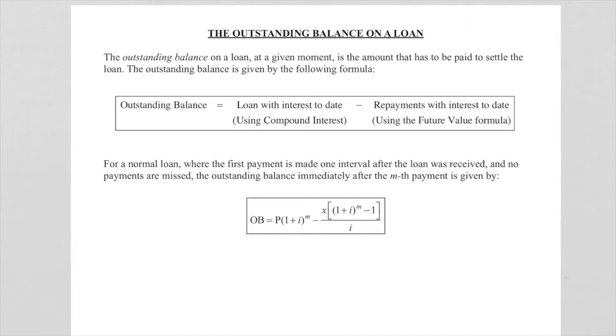So in terms of symbols, this outstanding balance will be P(1+i)^m minus x[(1+i)^m - 1]/i. Please take note that this m and that m must be the same. That is the number of payments made.